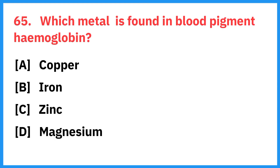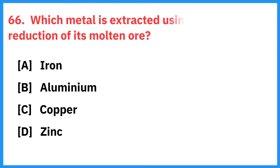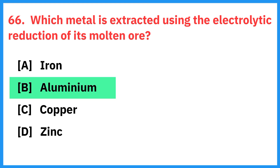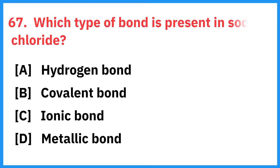Which metal is found in the blood pigment hemoglobin? Right answer is iron. Which metal is extracted using the electrolytic reduction of its molten ore? Right answer is aluminum.